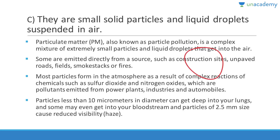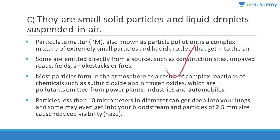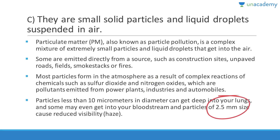Most particles form in the atmosphere through complex reactions of chemicals like sulfur dioxide and nitrogen oxides. Particles are of two types: less than 2.5 microns (PM2.5) and less than 10 microns (PM10). PM2.5 is very dangerous — it can even enter the lungs and bloodstream, and both can cause reduced visibility and haze as seen in Delhi.